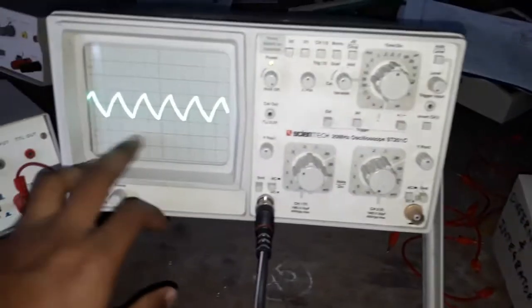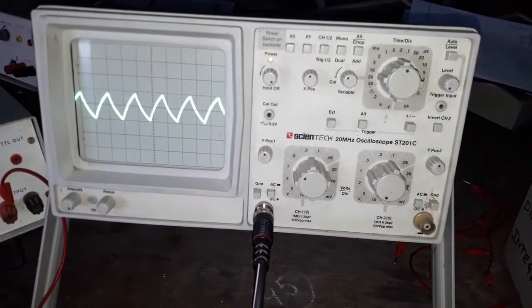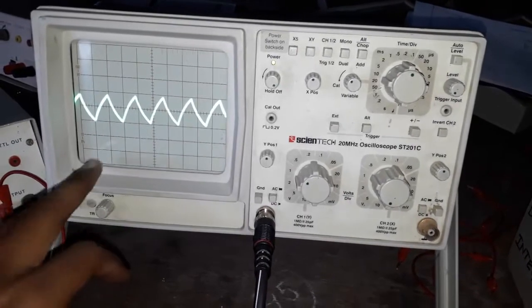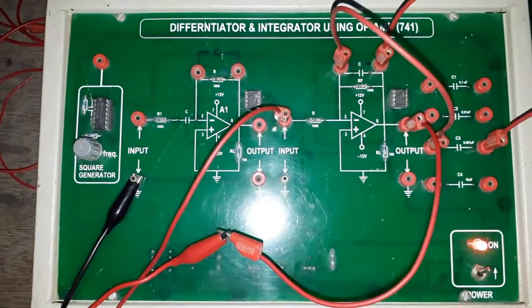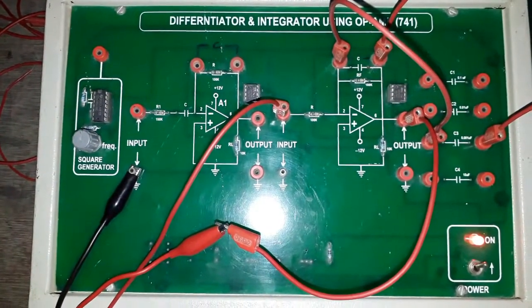We gave input as square waves and the output came as triangular waves. Before, we just saw it in the single channel. Now let's see it in dual channel.